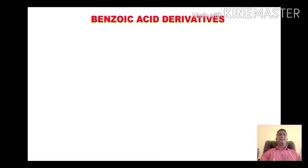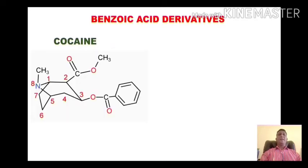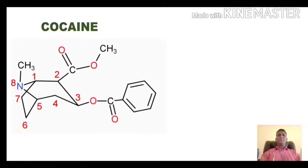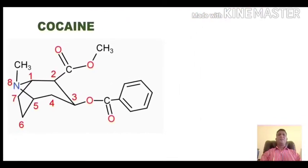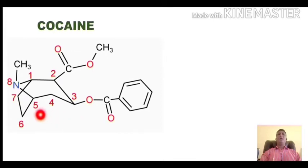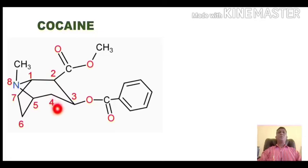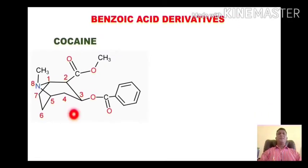The first class is the benzoic acid derivatives. The first drug belonging to this category is cocaine. If we look at the structure carefully, we will find the presence of a bicyclic ring system — a fusion of two rings: a five-membered ring and a six-membered ring. Collectively this ring is called tropane, and the numbering starts here: one, two, three, four, and five.